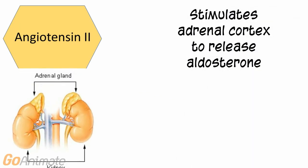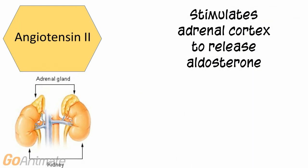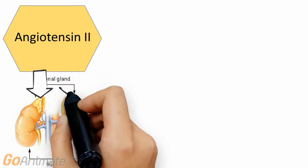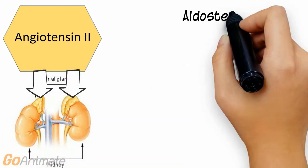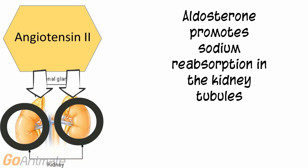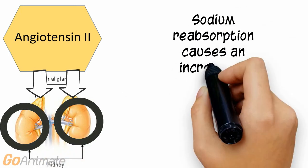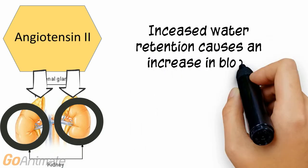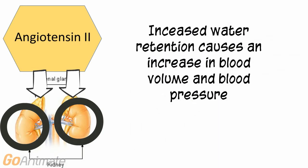Angiotensin 2 causes the release of aldosterone by the adrenal cortex. Aldosterone, a steroid hormone, promotes sodium retention by the kidney tubules. Increased sodium retention causes an increase in fluid retention, which in turn causes an increase in blood volume and blood pressure.